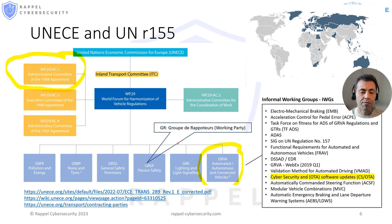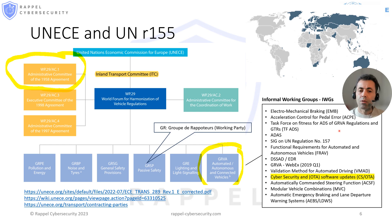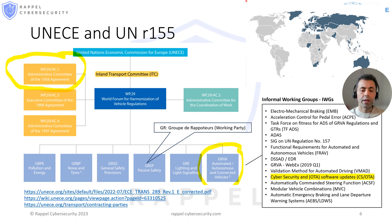The GR prefix comes from the French acronym Groupe de Rapporteurs, which is the equivalent of working party. Under the GRVA — the Automated, Autonomous, and Connected Vehicles group — there are several informal working groups, which you can see on the right. The one responsible for the UNR 155 regulation is highlighted in yellow: Cybersecurity and Software Updates. That is almost the complete hierarchy of the UNR 155 regulation. You may consult the links at the bottom of the slide for more information.